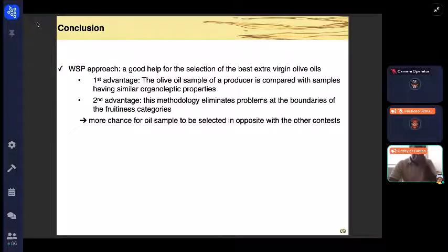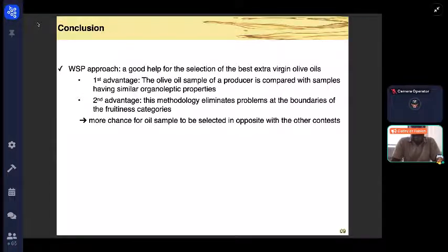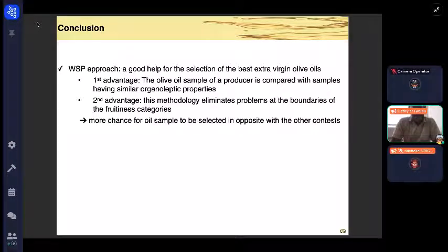The WSP approach is a good help for the selection of the best extra virgin olive oils. The first advantage is that the olive oil sample of a producer is compared with samples having similar organoleptic properties. The second advantage is that this methodology eliminates the problem at the boundary of the fruitiness categories. More chance for our sample to be selected in contrast with other contests.